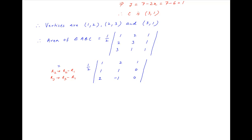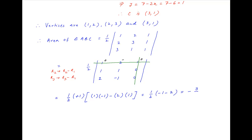Notice that in the third column, only one element is non-zero. Therefore, opening the determinant around that element, we get half of 1 times (1 times minus 1 minus 2 times 1), and this is equal to minus 3 upon 2. Therefore, the required area of triangle ABC is equal to the absolute value of minus 3 upon 2, which is equal to 3/2 square units — the required answer.